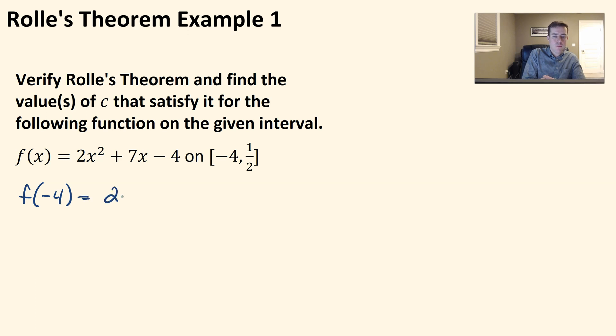So F of negative 4 would be 2 times negative 4 squared plus 7 times negative 4 minus 4. Negative 4 squared is 16, 16 times 2 is 32, minus 28 minus 4. Oh, interesting. That's just going to be 0 here.